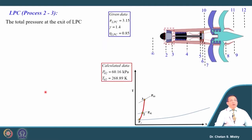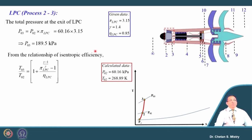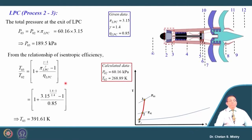For the LP compressor, the pressure ratio is 3.15 and isentropic efficiency is 85 percent. The inlet pressure is 60.16 kilo Pascal, giving an outlet pressure of 189.5 kilo Pascal. Using the pressure ratio and efficiency, the outlet temperature from the LP compressor is 391.61 Kelvin. Be careful with units.